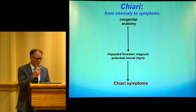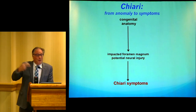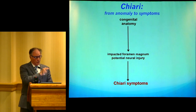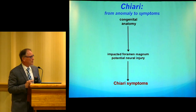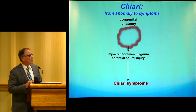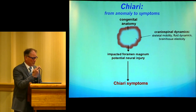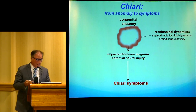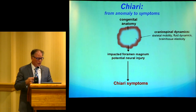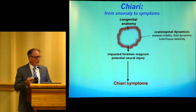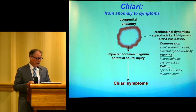The simple way to think about Chiari is: congenital anomaly, impacted foramen, let's do a decompression. But when you really see many people with Chiari, you realize there are many uncertainties in each of these steps. There are dynamics — craniospinal dynamics, skeletal mobility, fluid dynamics — and brain tissue elasticity that play a role in how much impaction of the tonsils, how much crowding there may be, and what effect it may have.